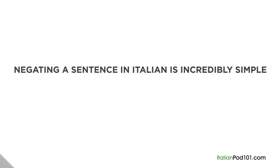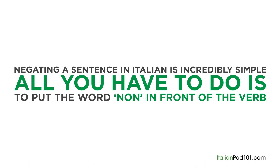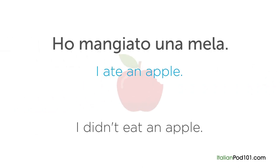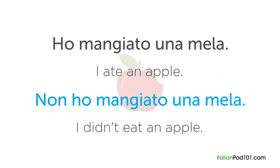Negating a sentence in Italian is incredibly simple. All you have to do is put the word 'non' in front of the verb. Let's go back to the original example, 'I ate an apple.' The verb is 'ho mangiato' in Italian. 'Ho mangiato una mela.' To make this sentence negative, simply add 'non' before the verb: 'Non ho mangiato una mela.'